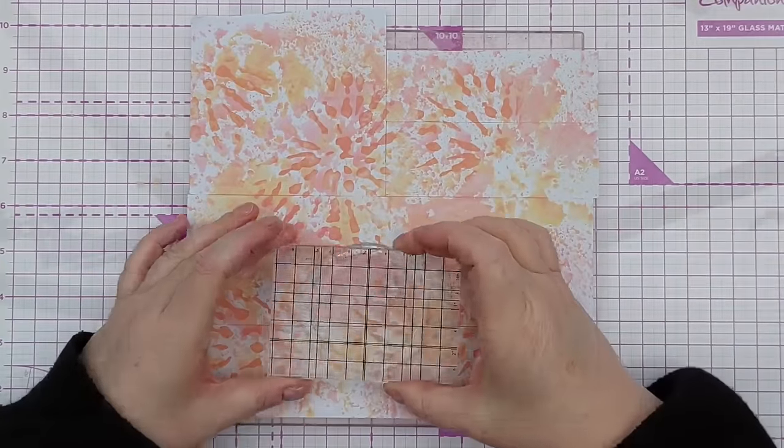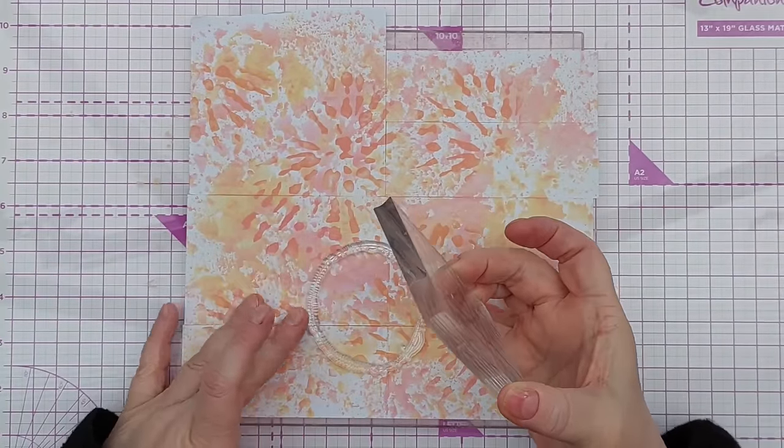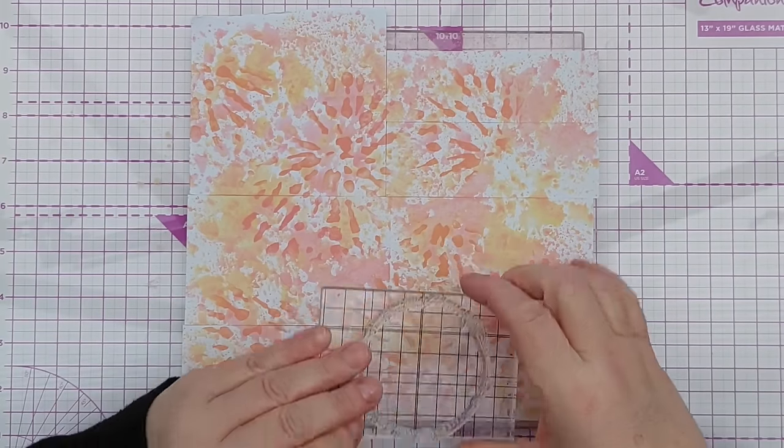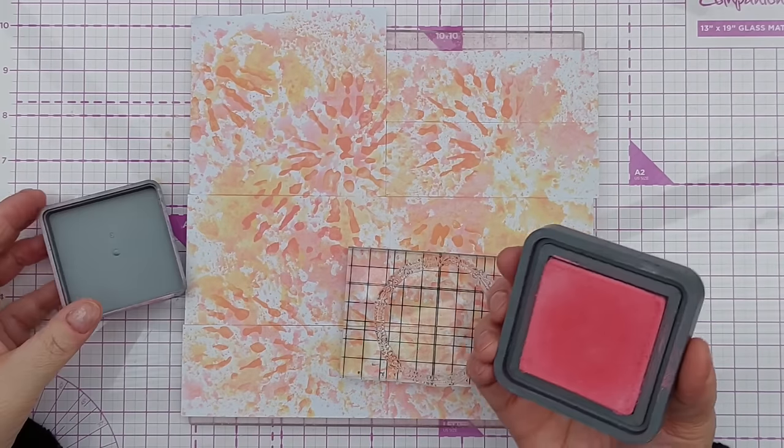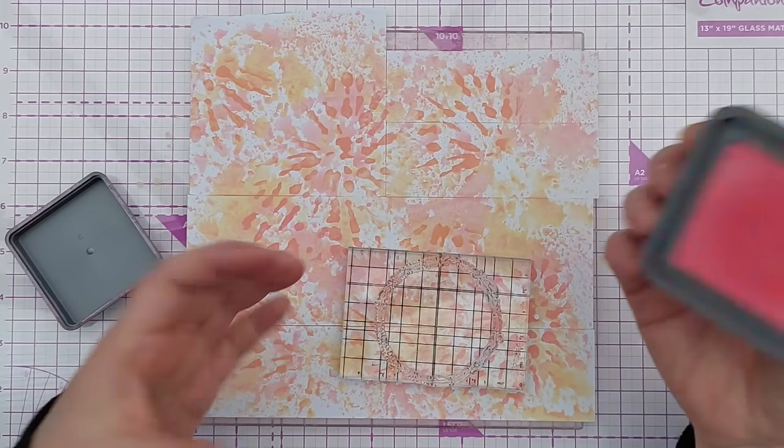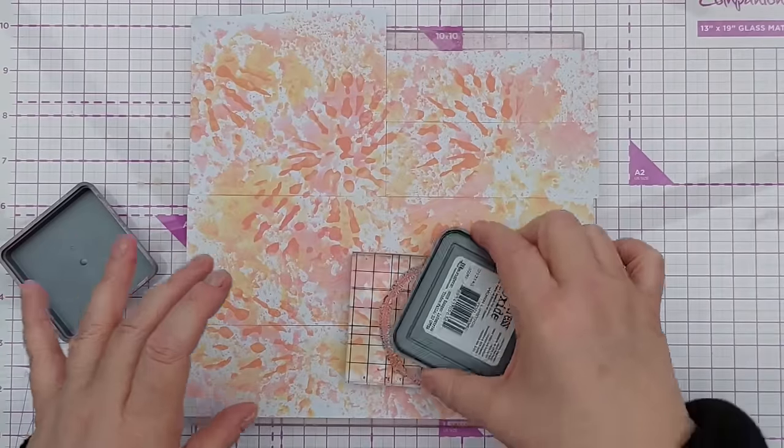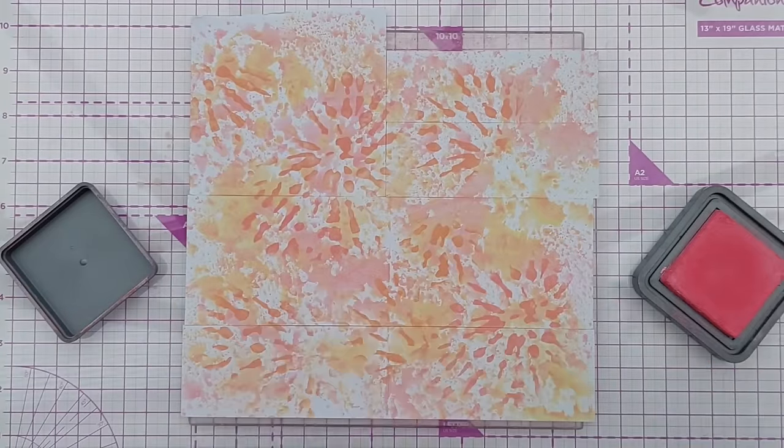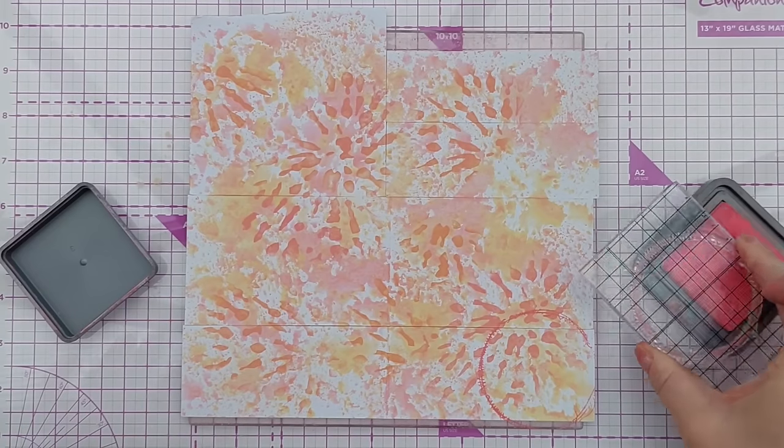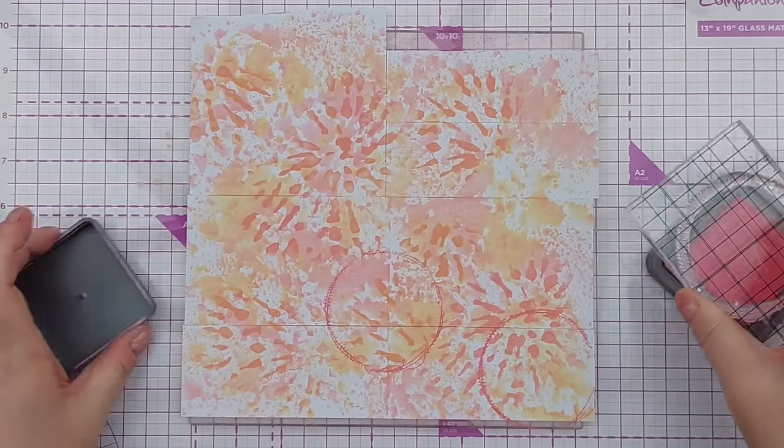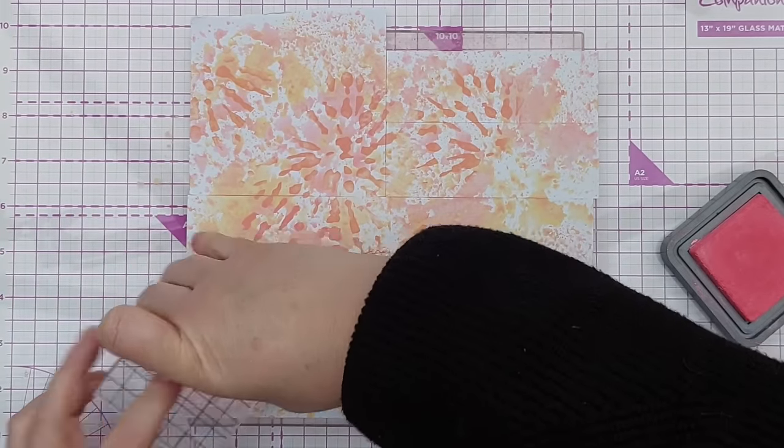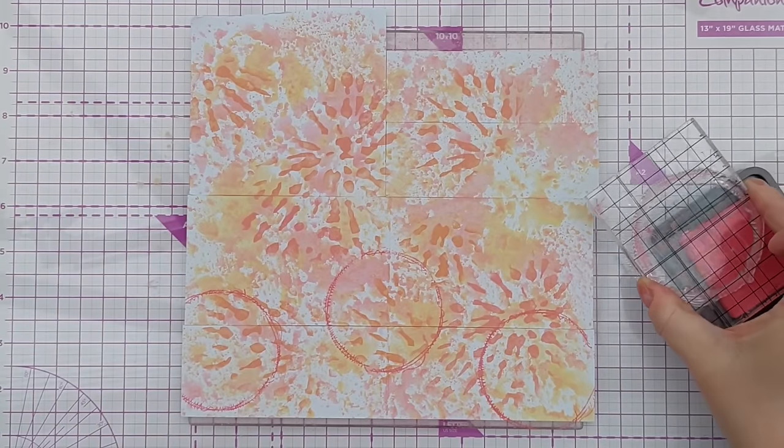So now I've got this stitched circle stamp. I'm going to pick it up with an acrylic block and I'm going to stamp with warm lipstick which is in the same color family-ish as these colors. And again I'm going to try and get the stamped image to overlap the breaks here, the edges of the scraps, so they get a good distribution.